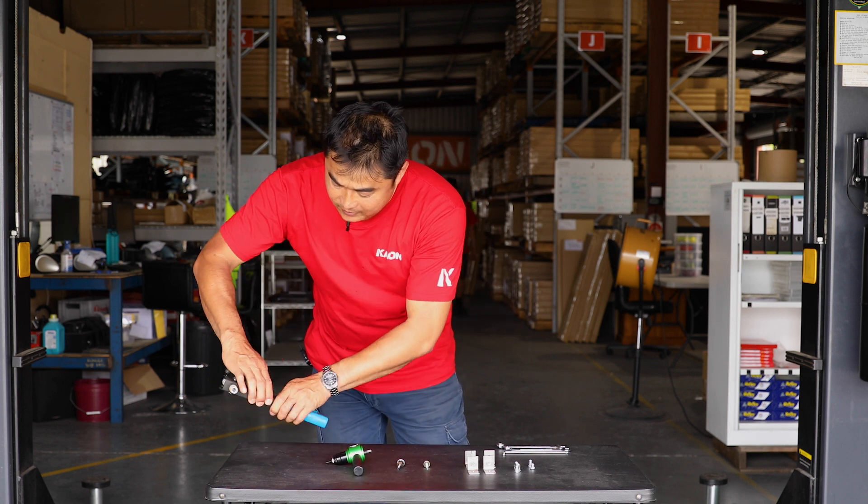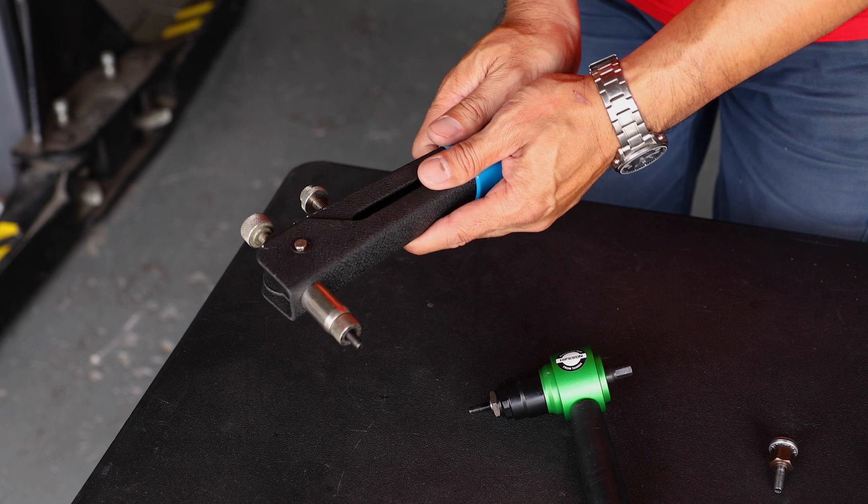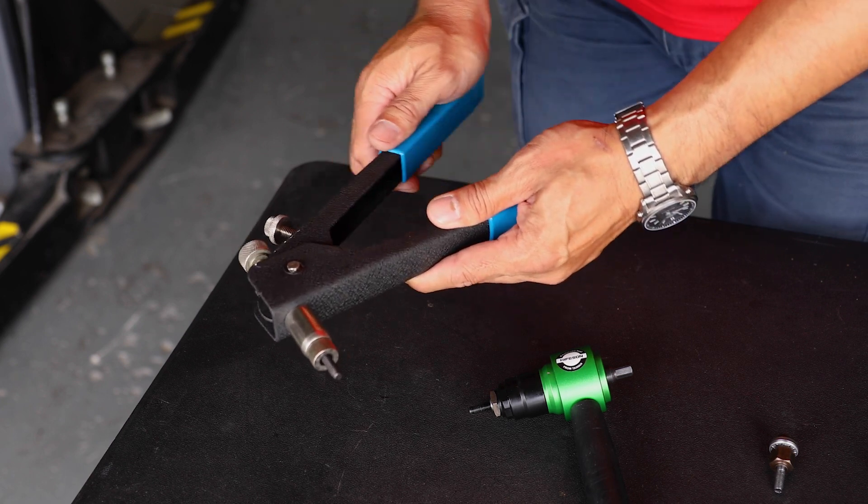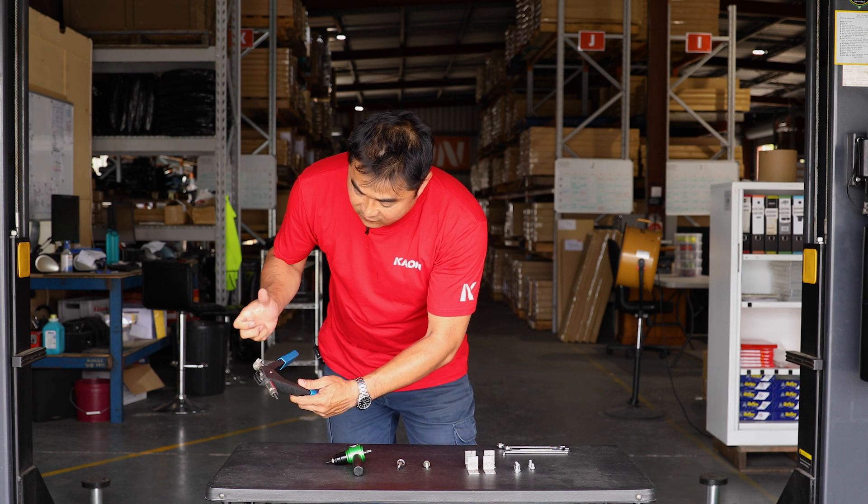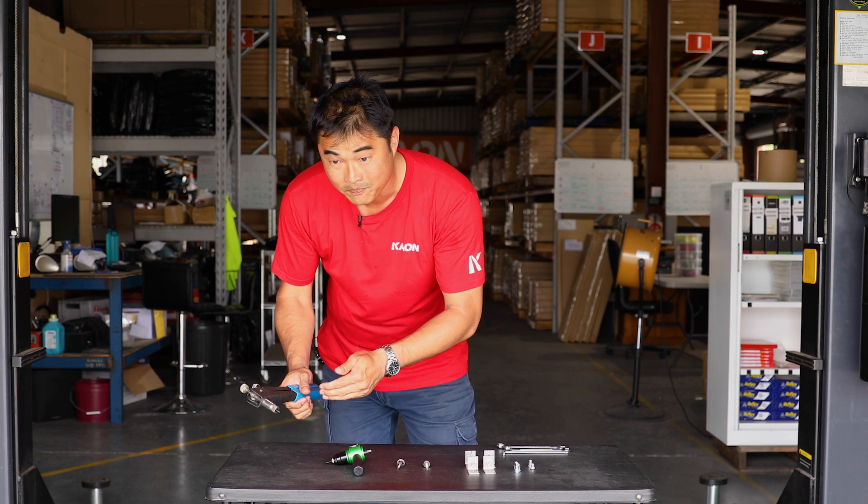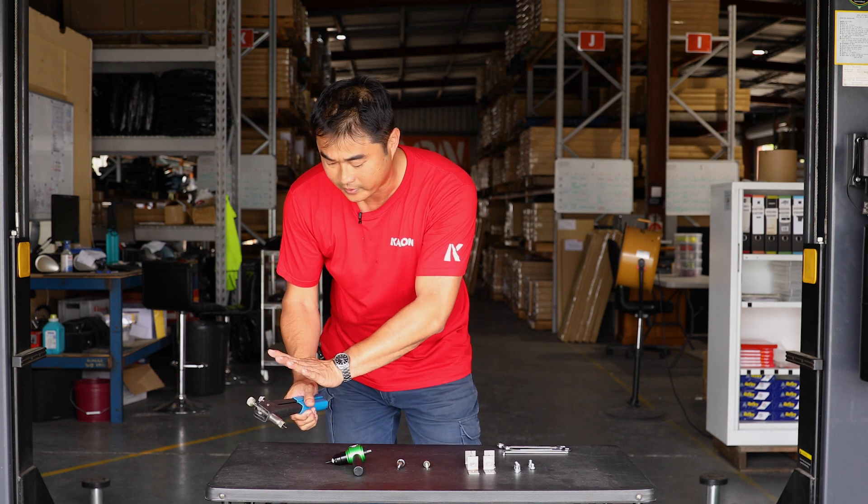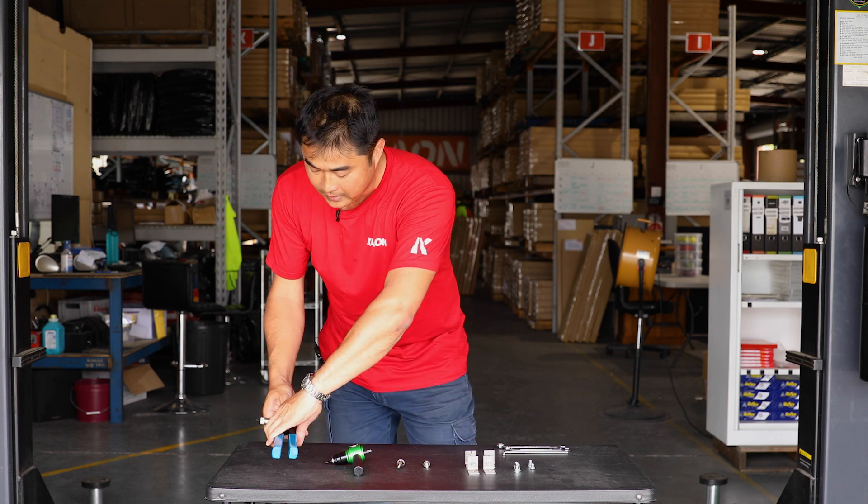And we've got this one here, I would not recommend this. It's more like a pop rivet style and when you pull on it it pulls the thread back but what it means is you need a fair bit of force to set the nutserts properly and it's very inconsistent so I wouldn't recommend this style of nutsert tool.